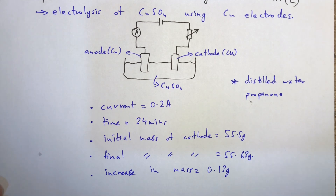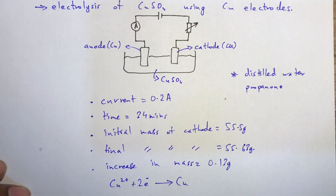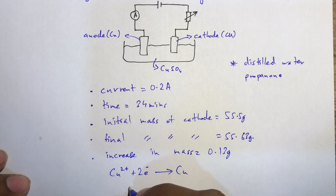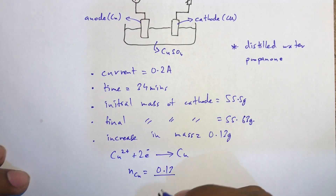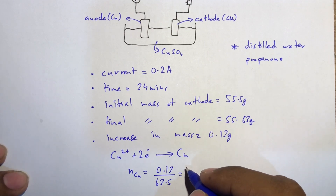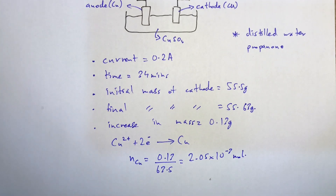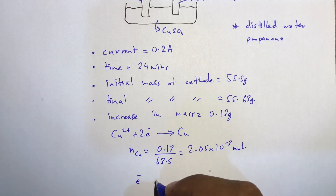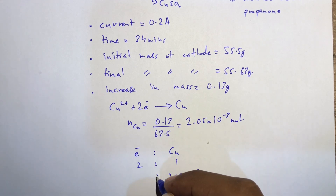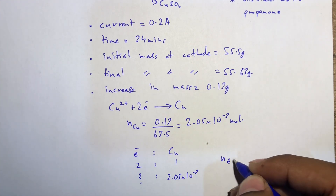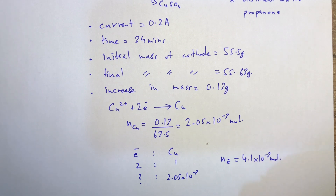At the cathode, reduction takes place: Cu²⁺ + 2e⁻ → Cu. The moles of copper deposited = 0.13 / 63.5 = 2.05 × 10⁻³ moles. From the equation, the ratio of electrons to copper is 2:1, so moles of electrons = 2 × 2.05 × 10⁻³ = 4.1 × 10⁻³ moles.